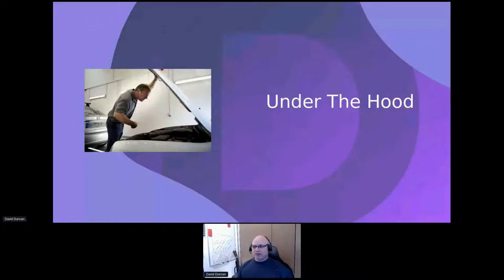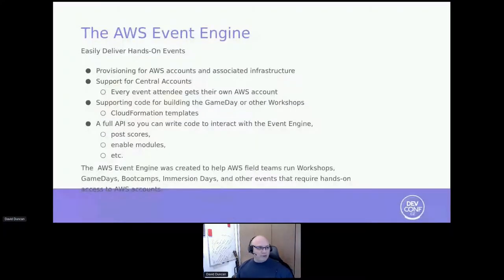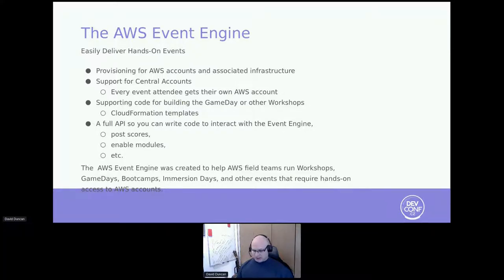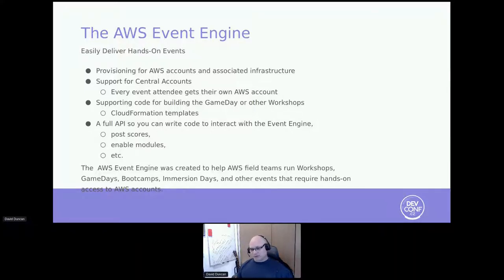The linchpin of everything is what we call the AWS Event Engine. The AWS Event Engine is a sort of a living codebase in an Amazon account that provides the framework for all of the things that participants interact with. It creates an account structure for each one of the individual teams. Each team of each group has an isolated account structure that doesn't have anything to do with anyone else's accounts in the room — so we've separated everything out.